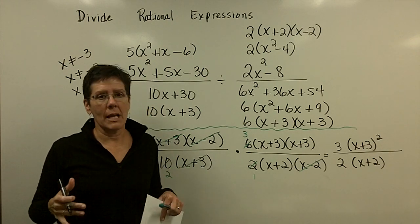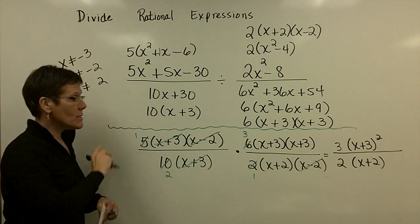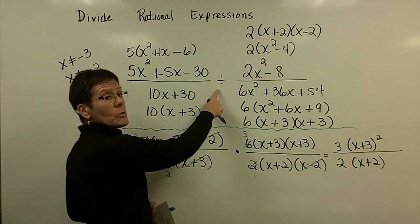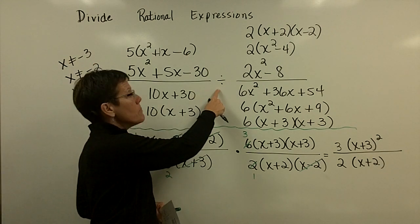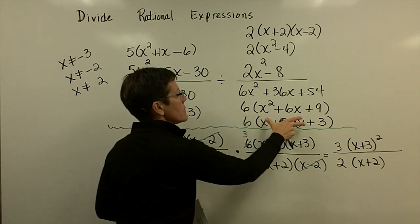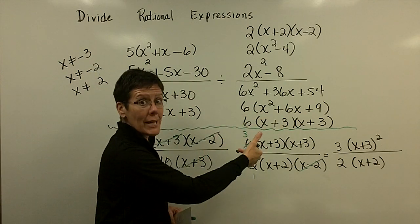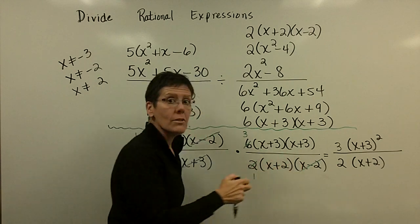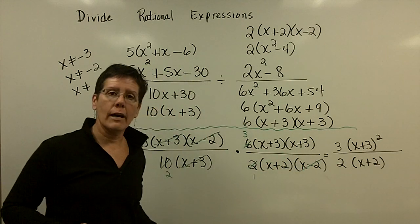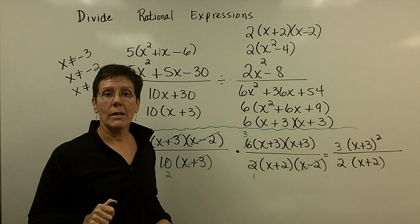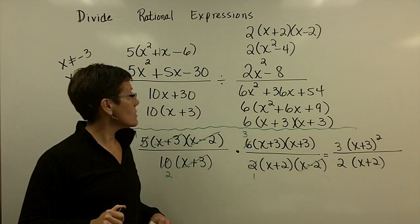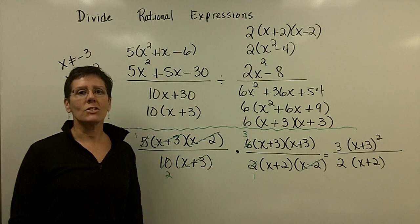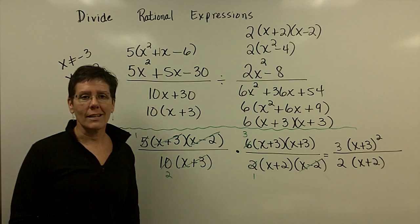It doesn't matter that those values were removed as common factors — the original problem is what I base the domain restrictions on. With a division problem you must be very careful, because you have the denominator of the first fraction and the denominator of the second, and when you flip it, what was the numerator becomes a denominator — those values that would cause division by zero are restrictions as well. We're done with division; we'll move on to adding and subtracting rational expressions in our next clip.